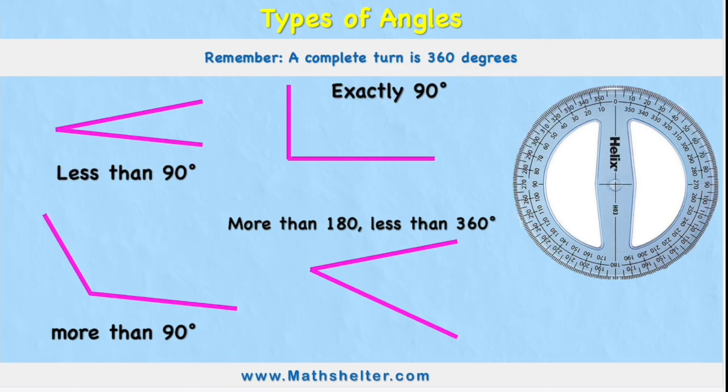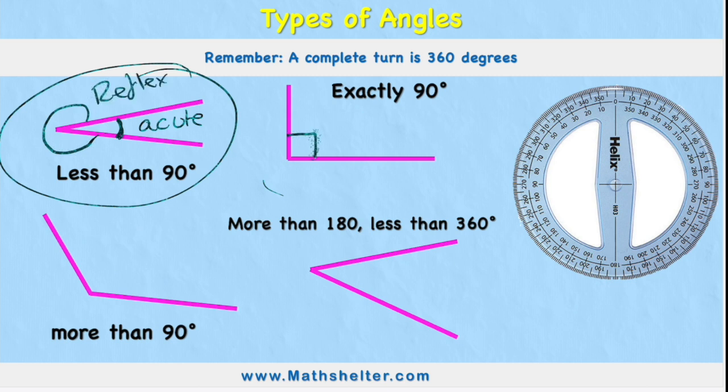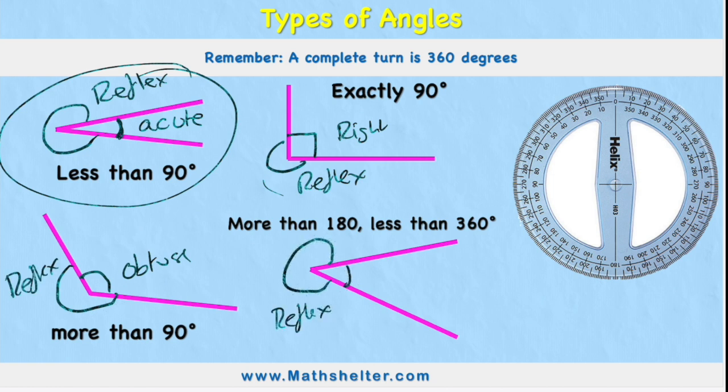Now, one thing to bear in mind is if we have two sets of lines, like this example just here, or any of these examples, then I'm actually always going to have two angles that I could measure. I could measure this inside acute angle, or I could measure the outside reflex angle. Or on the second example, I could measure the right angle, or I could measure the reflex. And again, third example, I could measure the obtuse angle or the reflex. And again, last one, I could measure the reflex, or in this case, I could measure the inside angle, which is an acute angle.